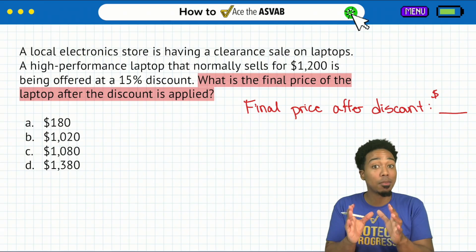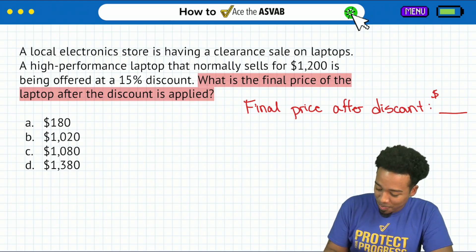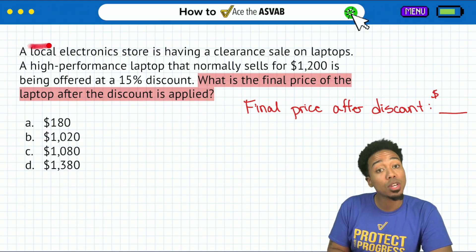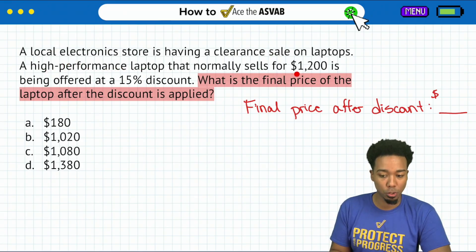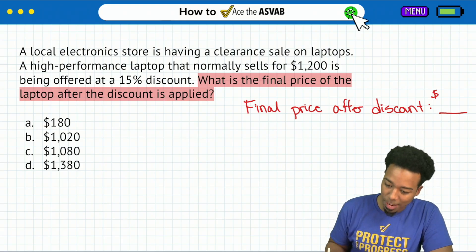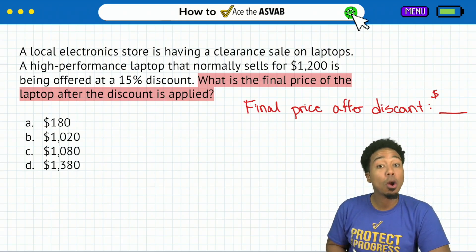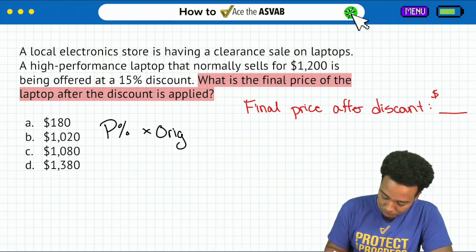Watch this — this is how some of us are going to get confused, but it's a very fixable thing. A local electronics store is having a clearance sale on laptops. A high-performance laptop that normally sells for $1,200 is being offered at a 15% discount. What's that final price? So let's set up our percentage formula: the percent multiplied by the original value equals the result.